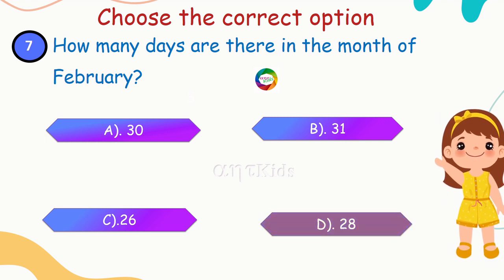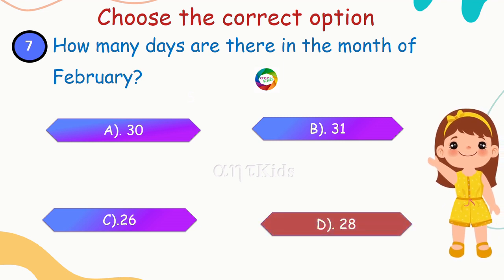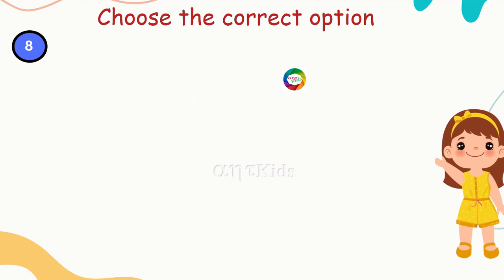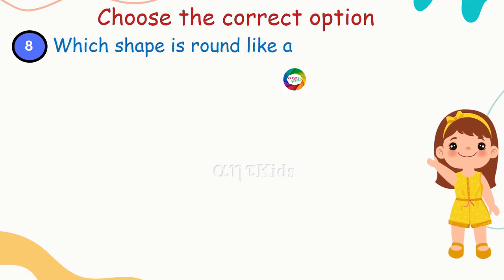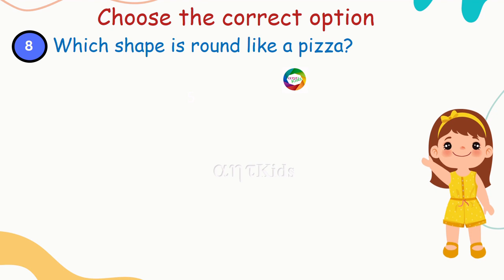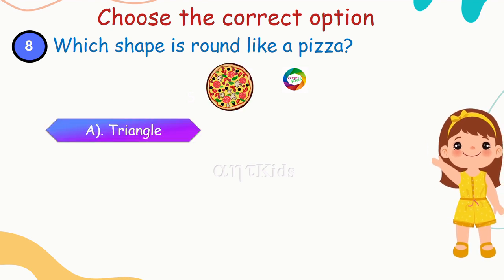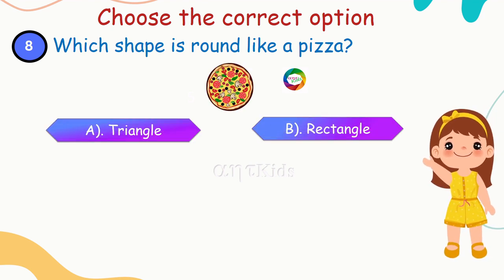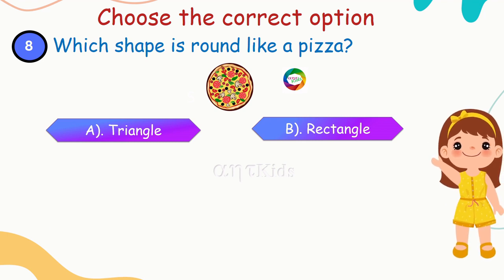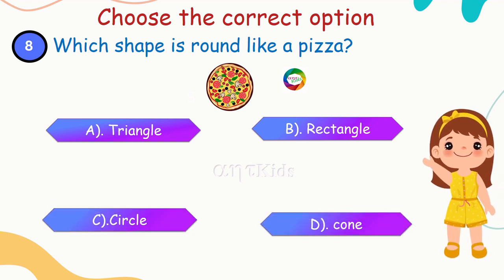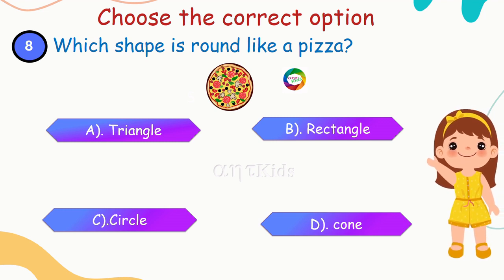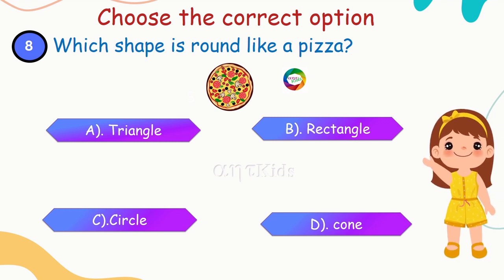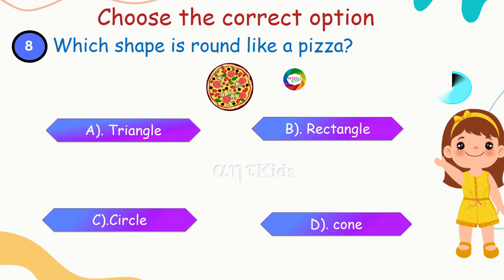Yes, 28 is the correct answer. Next question: which shape is round like a pizza? Look at the shapes here — triangle, rectangle, circle, cone. Which shape is round like a pizza? Yes, you have to find it out!